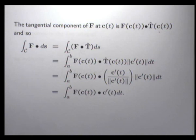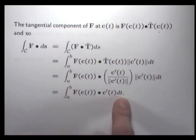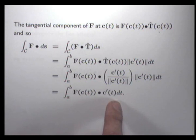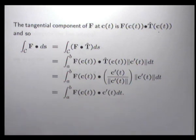In other words, this is just the integral that you know. It's the dot product of these two things — you'll get a function of t and just integrate it from t equals a to t equals b.